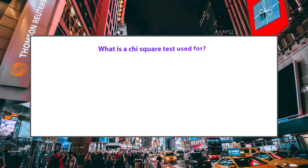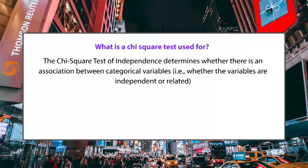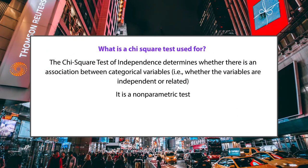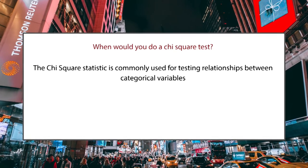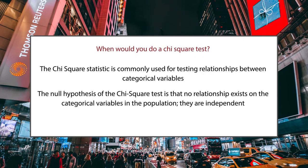A frequently asked question: what is the Chi-square test used for? The Chi-square test of independence determines whether there is an association between categorical variables — that is, whether the variables are independent or related. It is a non-parametric test, also known as the Chi-square test of association. The null hypothesis of the Chi-square test is that no relationship exists among the categorical variables in the population; they are independent.